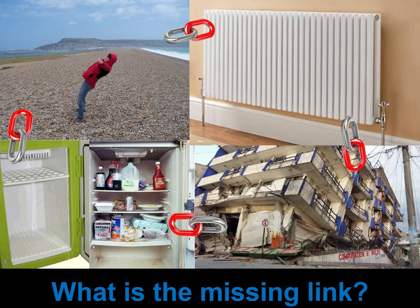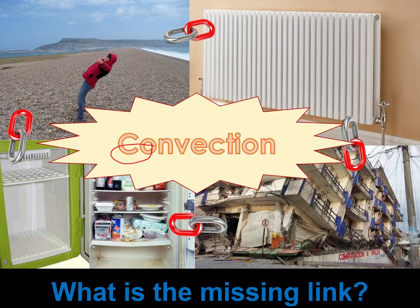In terms of everyday phenomena, the fact that it's windy at the beach, the fact that you find radiators at the bottom of a wall, earthquakes, and the fact that you find the cooling element at the top of a fridge or freezer. The missing link between all of those things is convection.